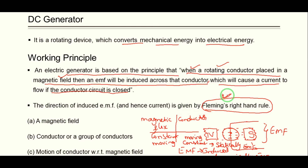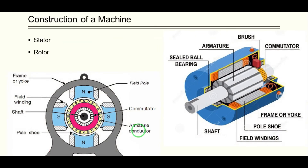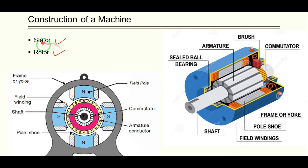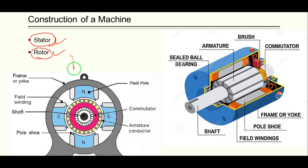This is the working principle. Now we will discuss construction. To construct a DC machine, there are two main important parts: the stator and the rotor. Stator refers to stationary parts, and rotor refers to rotating parts.